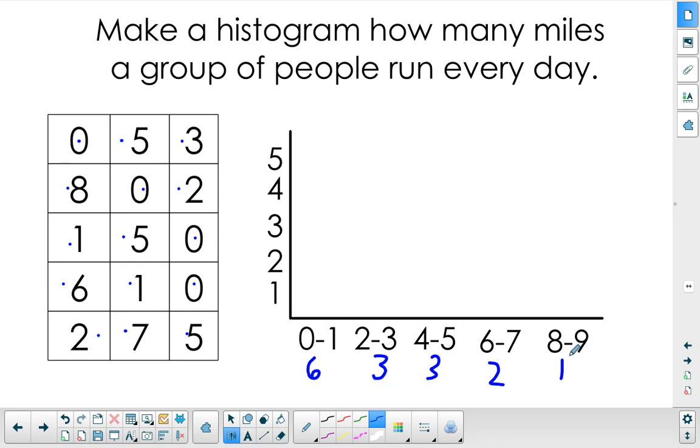Now I notice this interval is eight through nine, even though there were no nines included in the data set. They had to make those interval ranges equal, so they couldn't just put an eight there. They had to include eight through nine, even though there are no nines in the data points, just so that each of them have two numbers included in their range.